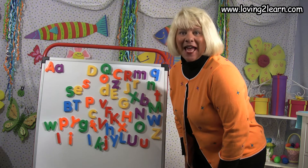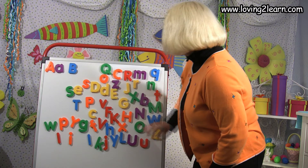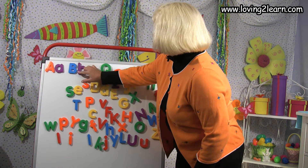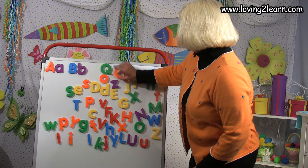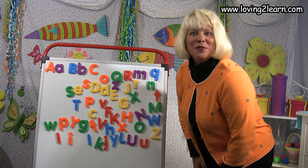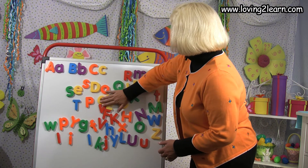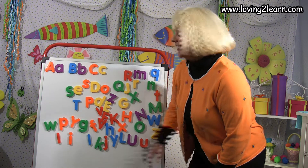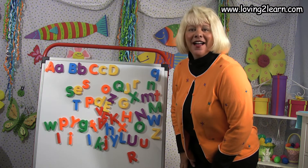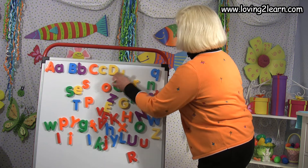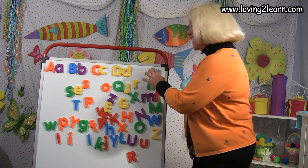Then we need the capital B and the small b. Here it is — straight line down, circle around the bottom. Then we need the capital C and the small c. Then we need the capital D. Here's the capital D and the small d. Did you see it? Here it is. They both just happen to be yellow. So we have a, b, c, d, e — that's right.